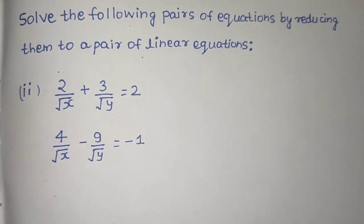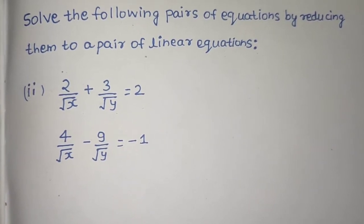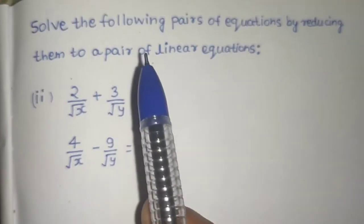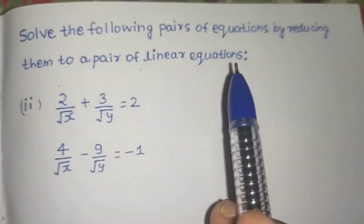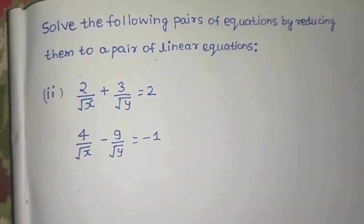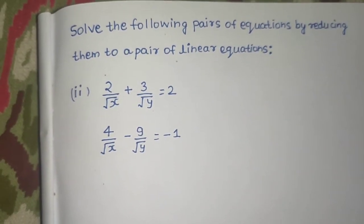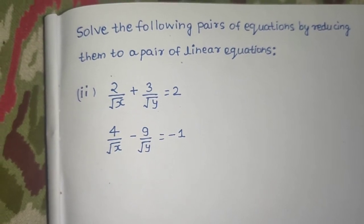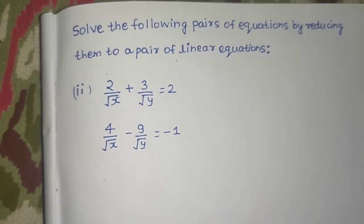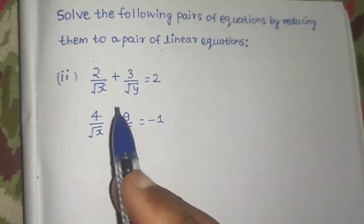This question is from Exercise 3.6, question number one, second part, from Class 10th NCERT. It says: solve the following pair of equations by reducing them to a pair of linear equations. This means currently these are not linear equations, so we need to reduce them to linear equations and then solve.